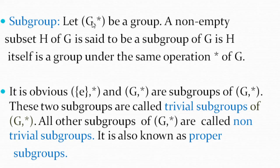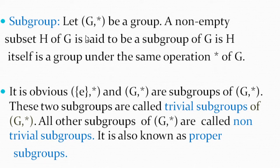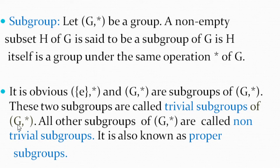Definition of subgroup: Let G be a group. A non-empty subset H of G is said to be a subgroup of G when H itself is a group under the same operation star of G. H has to satisfy all axioms of group under that operation. It is obvious that {E} and G under binary operation star are the subgroups of G — these we call trivial subgroups of G. All other subgroups of G are called non-trivial subgroups, also known as proper subgroups.